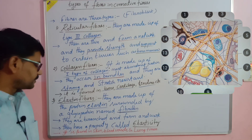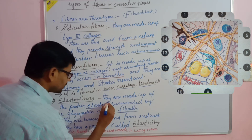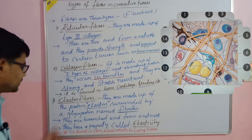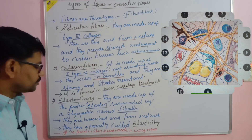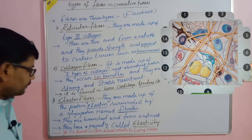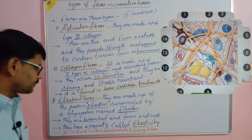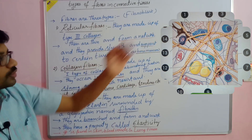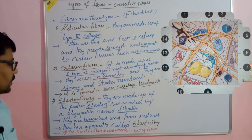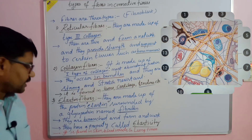The third type of fibers are elastin fibers. Elastin represents a yellow-colored protein — these are yellow-colored fibers made up of a special protein called elastin, which is why the name is given as elastin fibers. They are surrounded by a glycoprotein named fibrillin. Unlike collagen fibers, which are unbranched and in bundled form, elastin fibers are branched. In the diagram, collagen fibers are labeled number two and elastic fibers are labeled number three.